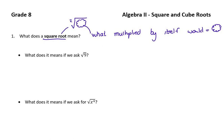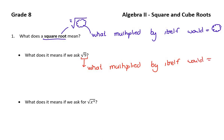For example, what does it mean to have the square root of 9? When you have a question that says the square root of 9, it's basically asking: what multiplied by itself would give you 9? Some of these roots you just know by heart. We know that 9 can be rewritten as 3 times 3. So the square root of 9 is 3, because what times itself gives you 9 — and the answer is 3.